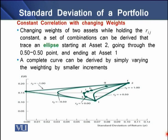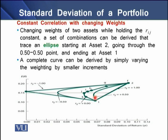The second case involves constant correlation with changing weights. Here, by changing the weights of two assets while holding the correlation constant, a set of combinations can be derived. We see that these combinations basically trace an ellipse starting at asset two, going through a 50-50 point, and ending at asset one. In the lower half of the screen, we can see asset one and asset two as individual assets. When we combine these assets in equal proportion, we get portfolios G, H, I, J, and K. Combining these assets in varying percentages gives us a complete curve of this shape.